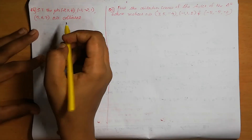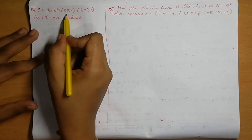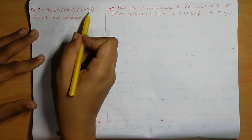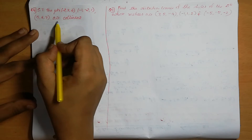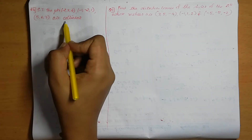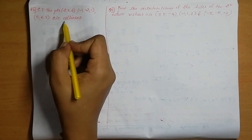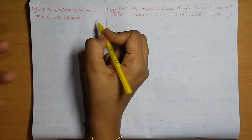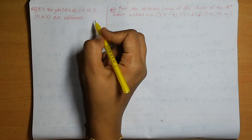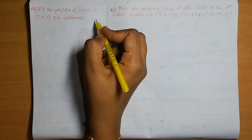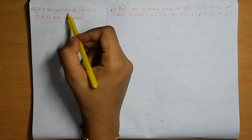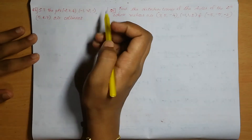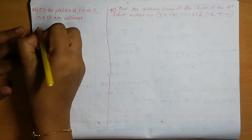Question number 4: Show that the points A(2, 3, 4), B(minus 1, minus 2, 1), and C(5, 8, 7) are collinear. Collinear means these three points are on a line. We can take the given points as A, B, C.